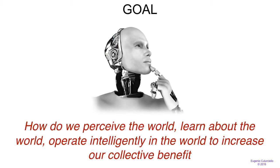The goal of this course is really to learn the fundamental mathematical and programmatic tools that allow us to perceive the world, learn about the world, and operate intelligently in the world to increase our collective benefits. This means we are teaching a course on machine learning and machine intelligence, where we believe that deep learning and neural networks will be the key to create machines that operate a little bit like us — able to learn from the environment, solve their own goals, while not exactly needing supervision from humans all the time.